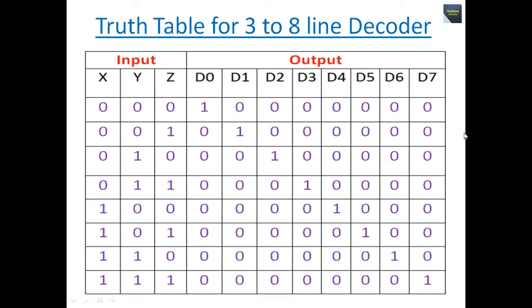A binary code of n digits can be used to store 2 to the power n distinct elements of coded information. A decoder decodes the n bits into 2 to the power n lines, meaning n input lines and 2 to the power n output lines. A decoder does the opposite job of an encoder — it is a combinational circuit that converts n lines of input into 2 to the power n lines of output.